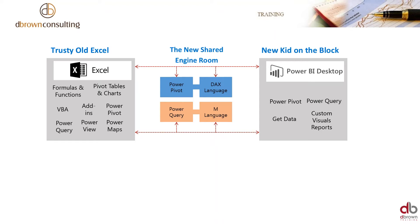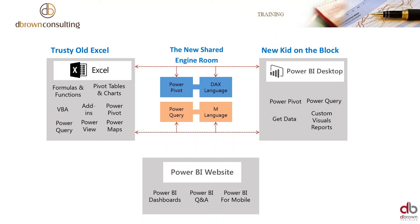PowerPivot receives that data and builds the data model. For example, how does the sales data from a text file connect with the list of sales reps collected from HR, so you can do a revenue report by sales rep? That's what PowerPivot does. The formulas you can use to enhance your reporting are DAX. That's the new language you need to learn, and once you learn it in Excel, it's easy to do in Power BI Desktop.